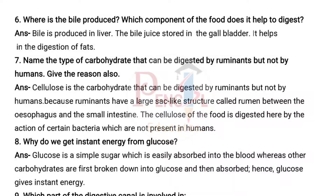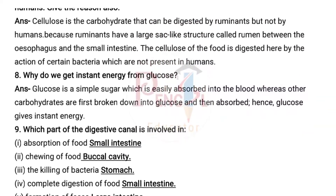Seventh question: Name the type of carbohydrate that can be digested by ruminants but not by humans. Give the reason also. Answer: Cellulose is the carbohydrate that can be digested by ruminants but not by humans, because ruminants have a large sac-like structure called rumen between the esophagus and small intestine. The cellulose of the food is digested here by the action of certain bacteria, which are not present in humans.